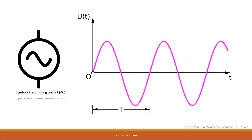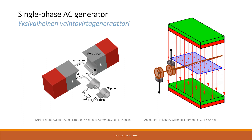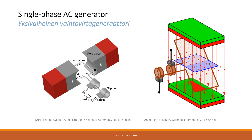Alternating current (AC) is a type of current that changes its direction of flow over time. This happens periodically. Most of the electrical energy produced is alternating current, therefore AC systems are used for many applications. An alternating current generator takes mechanical motion and converts it into electricity. The mechanical energy may come from a number of sources.